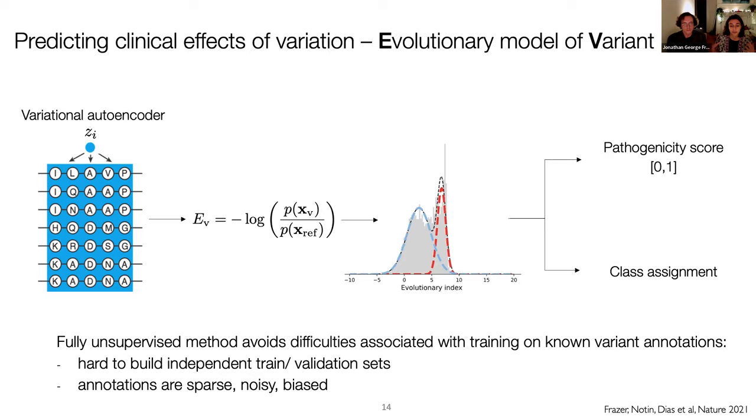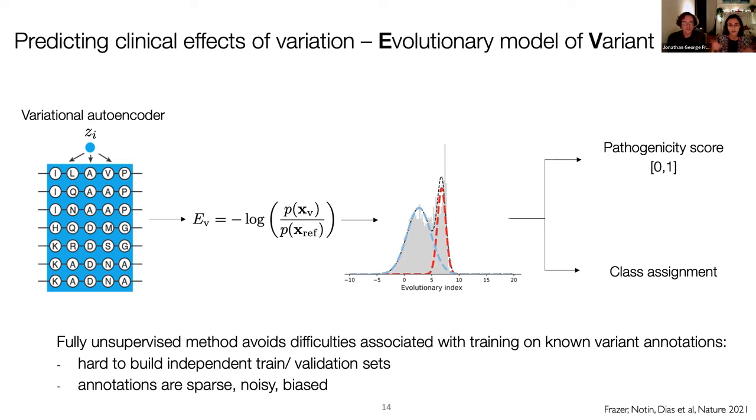So one of the things that we're really pleased about, and something that we were looking after when we were building this model, is that we wanted a model that was just based on evolutionary information. And specifically, it is a model that is unsupervised, and what we mean by this is that it does not train on clinical variant annotations that are known. And this brings us a handful of benefits. In particular, we sort of avoid some difficulties that are associated with models that have to train on these clinical annotations. In particular, it's known that it's very hard to build independent train-test sets of data to do a blind and solid validation of your models.